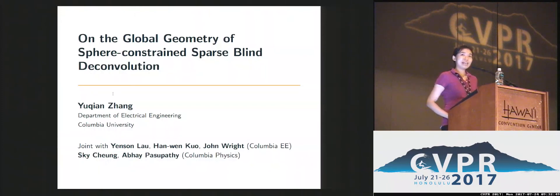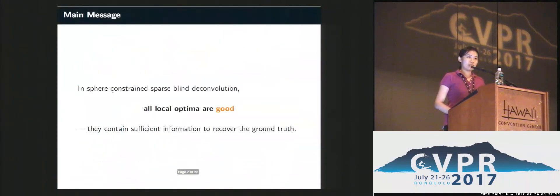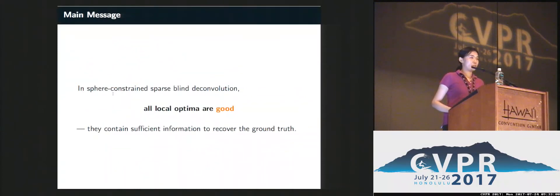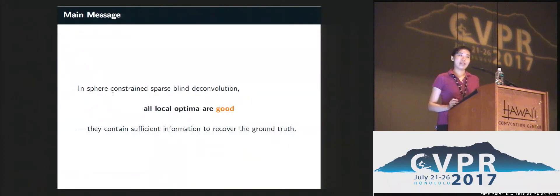It's a pleasure to be here. Today I will talk about the global geometry of sphere constraints, blind deconvolution. The natural formulation for this problem is non-convex, which is challenging for both theory and computation. In this talk, I will show that once we cast the problem in the right sphere, we have good geometry where every local minimum is good, so we can extract sufficient information to recover the ground truth.